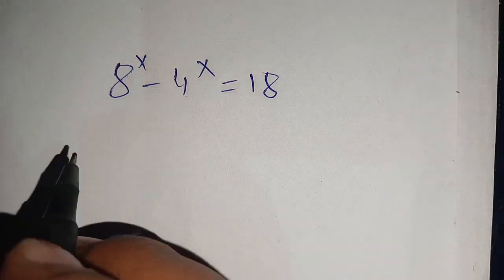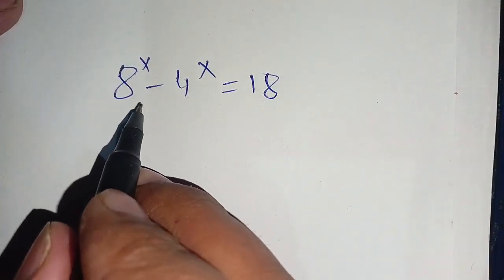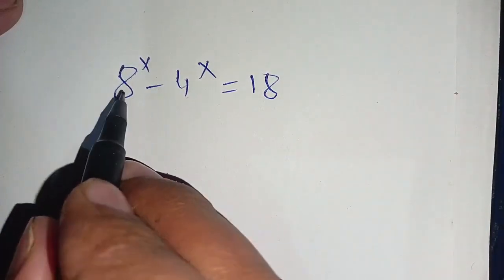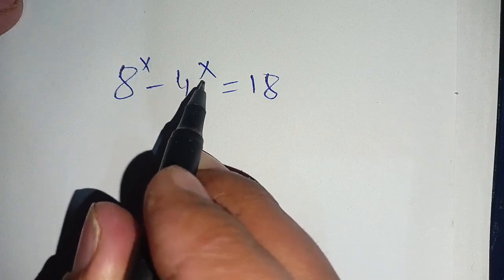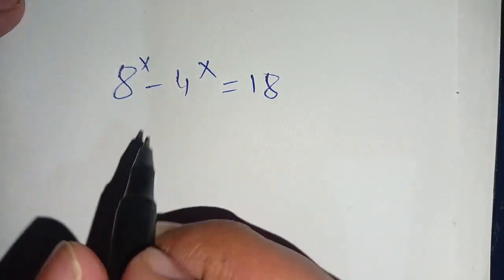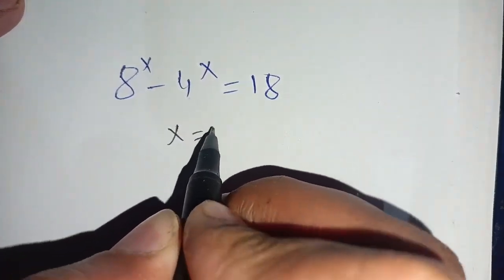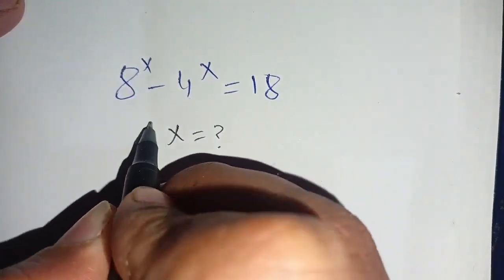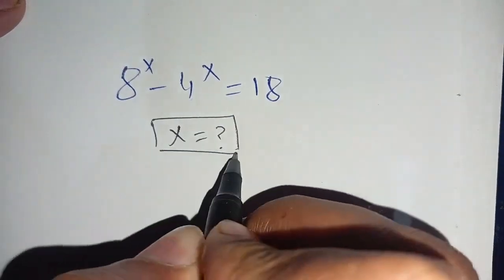Hello everyone. In today's video we are going to solve the exponential equation 8 to the power x minus 4 to the power x is equal to 18, and we have to find the value of x which satisfies this equation. Let us solve this.